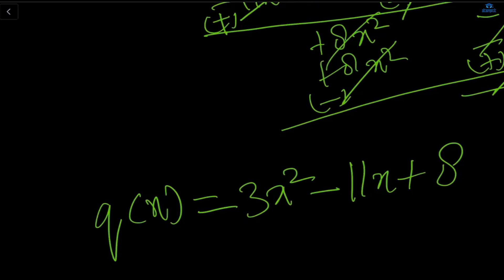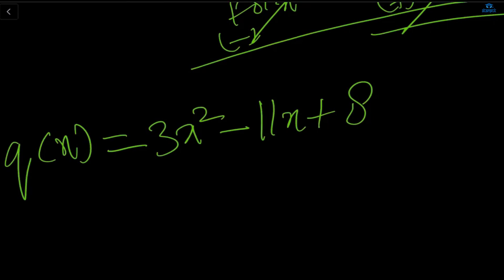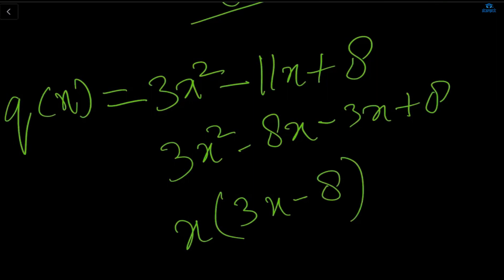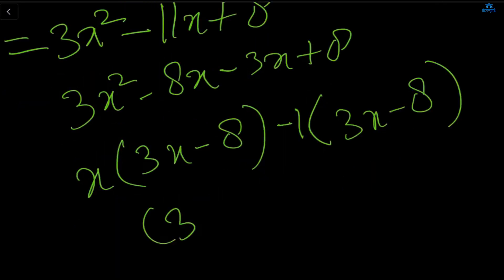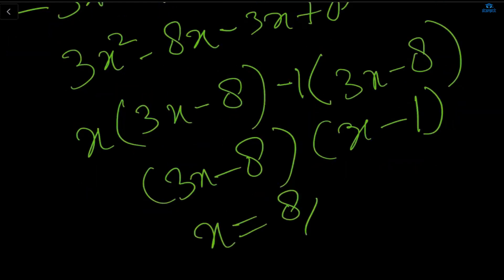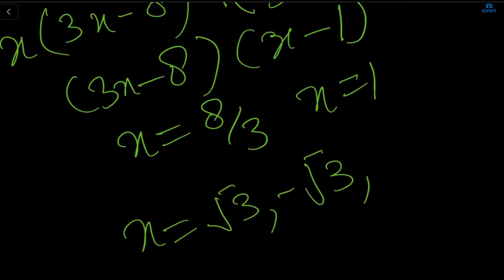Now we split the middle term of the quotient 3x² - 11x + 8. We write it as 3x² - 8x - 3x + 8. Taking x common from the first two gives x(3x - 8), and taking -1 common from the last two gives -1(3x - 8). So we get (3x - 8)(x - 1). Setting each to zero: x = 8/3 and x = 1. Therefore, all four zeros of the polynomial are √3, -√3, 8/3, and 1.